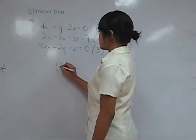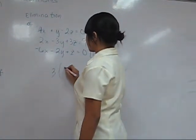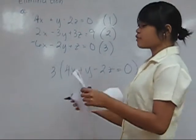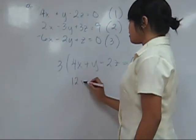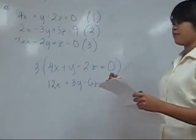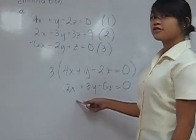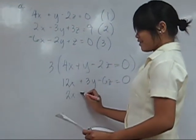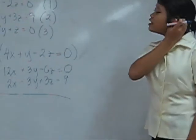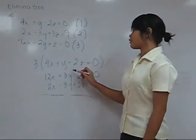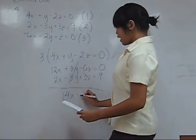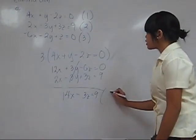When you multiply equation one by three, the result is 12x plus 3y minus 6z equals zero. Then add equation two — 2x minus 3y plus 3z equals nine — to this new equation. You can cancel out 3y and negative 3y. So the resulting equation is 14x minus 3z equals nine. This will be our equation number four.